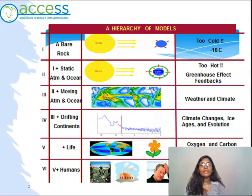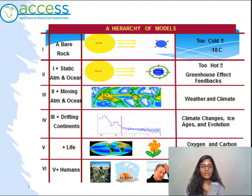Previously, we looked at the Earth as a bare rock and determined that it would be too cold. We added a static atmosphere and ocean and determined that the greenhouse gas effect would make the planet too warm. We then determined that circulating atmospheres and oceans will help to stabilize the climate and make it more bearable, closer to what we have now. We also looked at continental drift as well as the Milankovitch cycles and how they affect our climate.